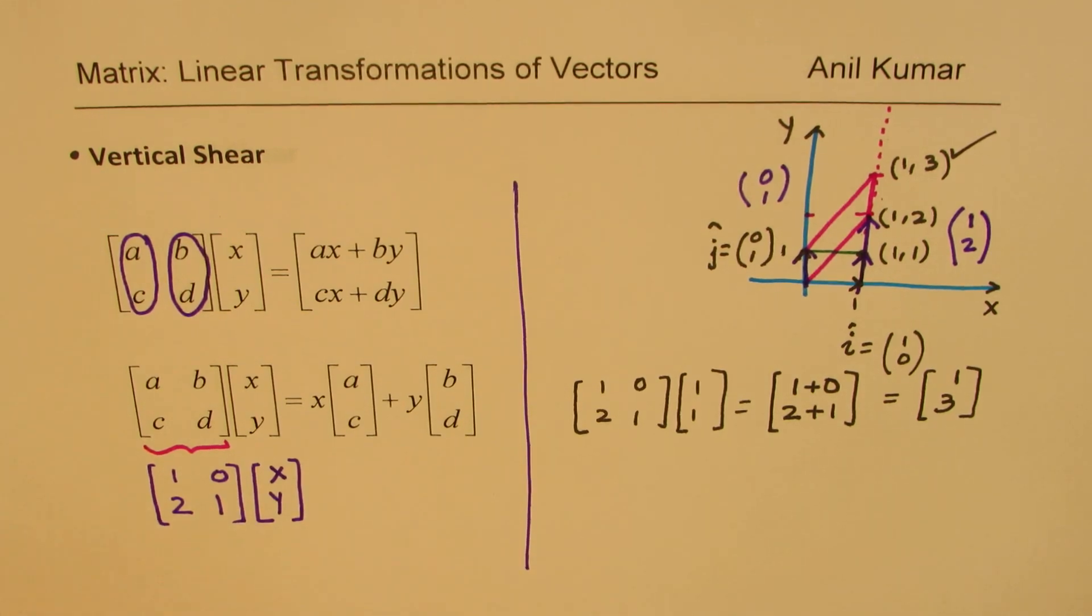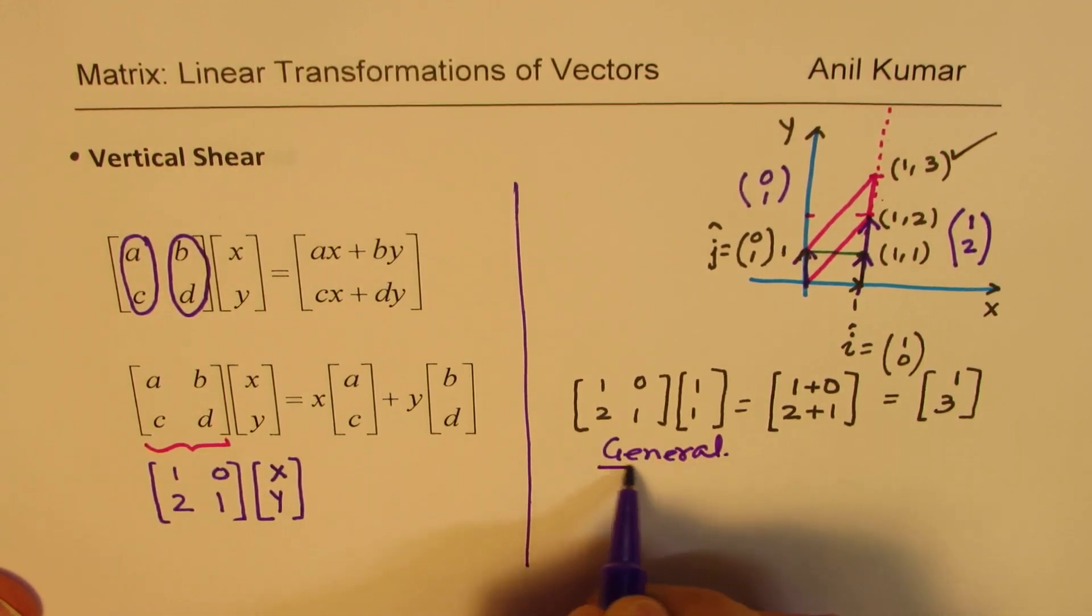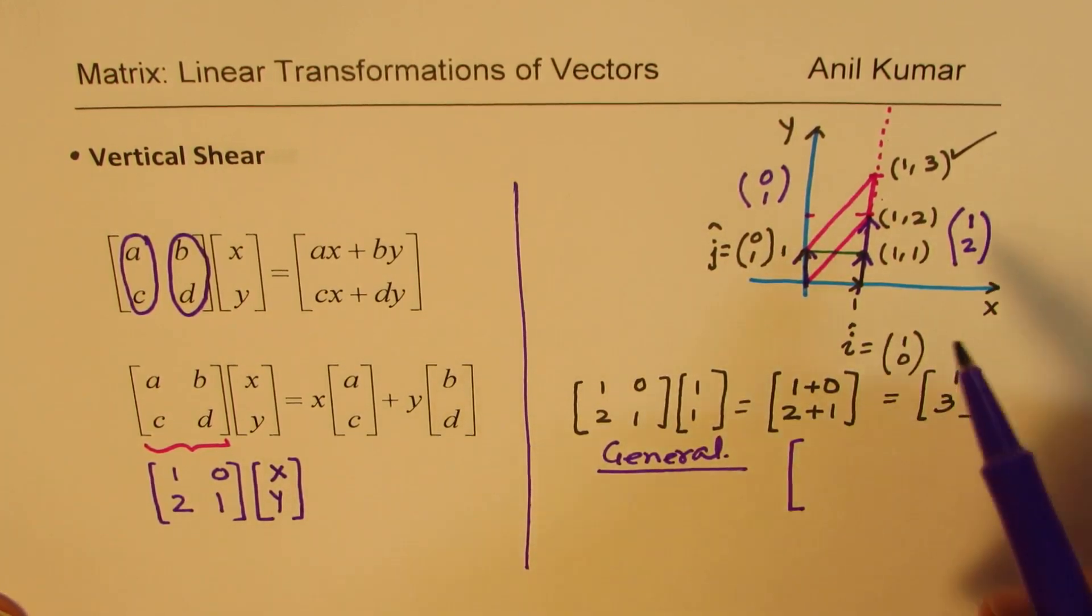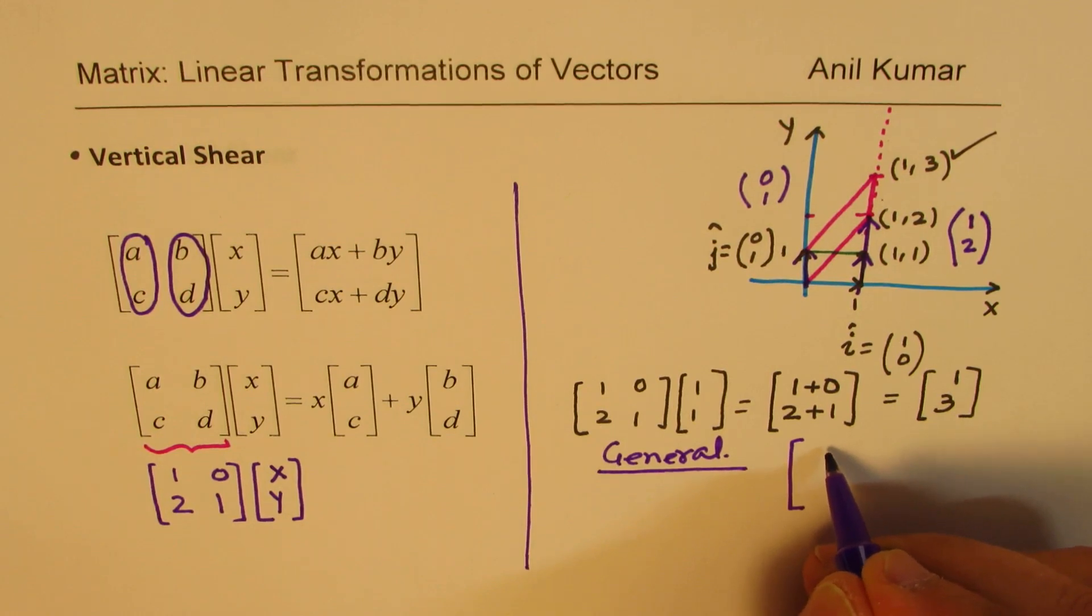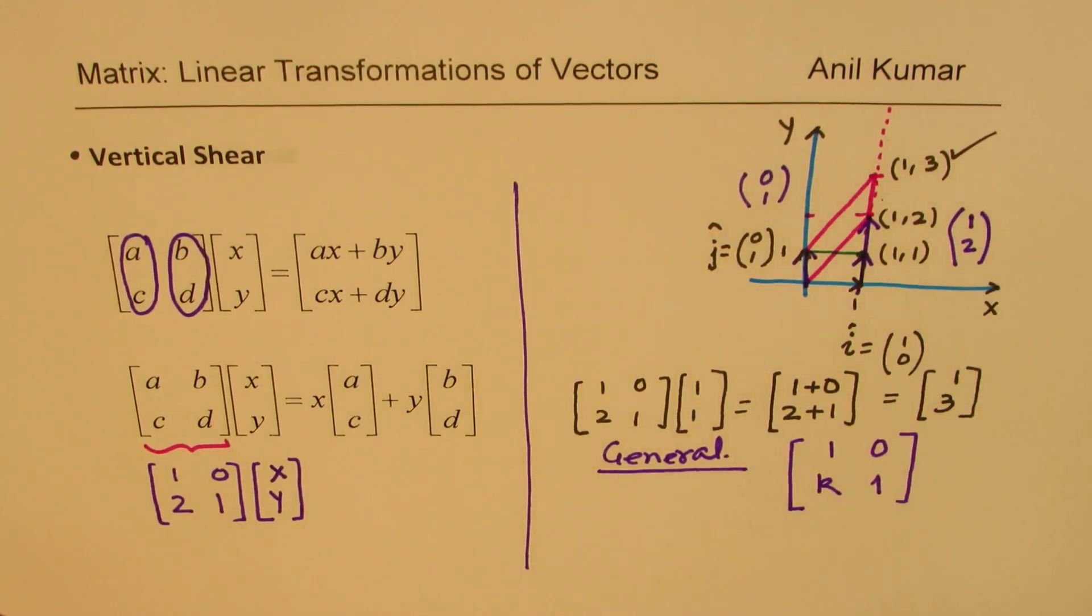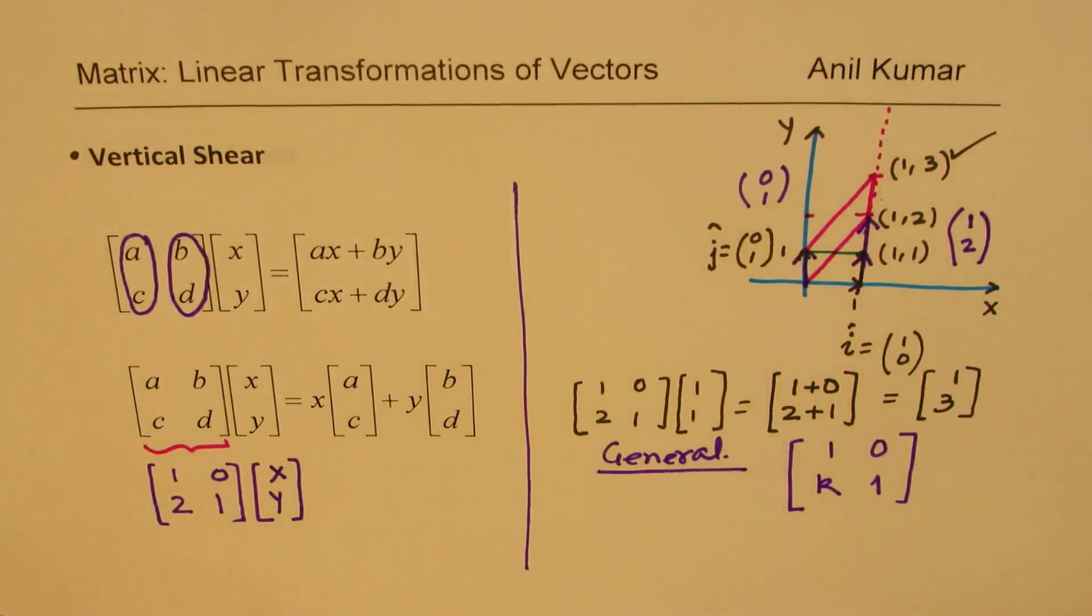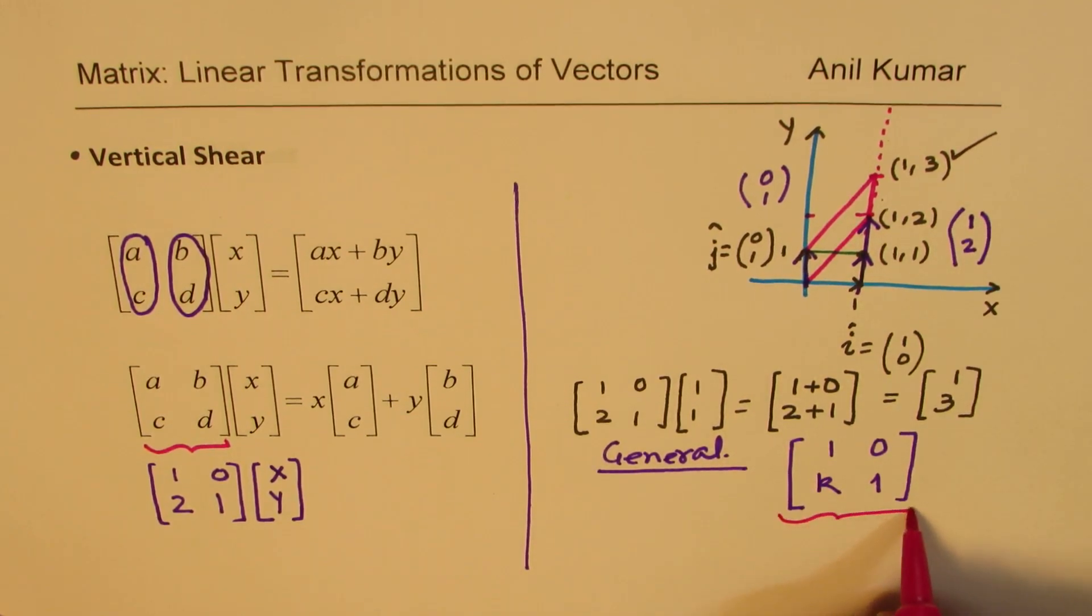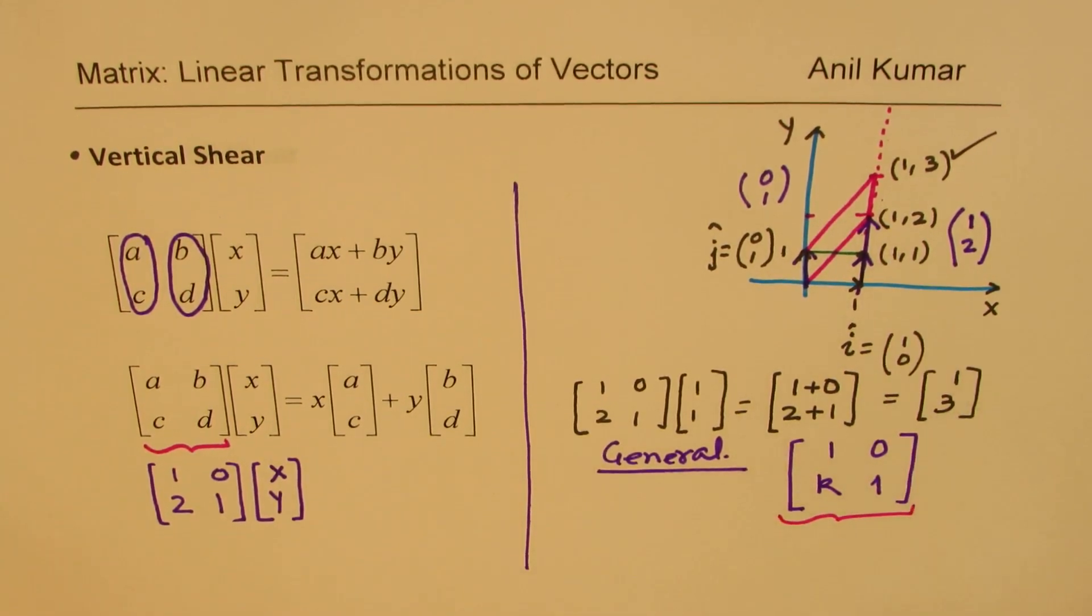In short, I could write this transformation matrix as, in general, I could write this as, now in this case it was 1,2. So it could be any other position. It could be 1 times k. So I could write this as [1 k; 0 1]. So that could make a change so that the points now will be, this point will not be 1,2, but it is going to be 1,k. So that could be a general equation for a vertical shear of this kind. So I hope that concept is clear.